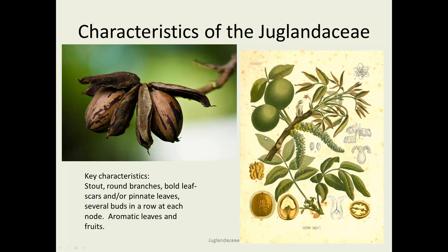On the right are walnut characteristics. You can see the large pinnate leaves, the nut inside a husk that isn't opening at maturity, the male flowers in catkins and the little reduced female flowers. In particular, the twigs are quite stout. Large leaf traces and glandular markings on the stems and leaves make it quite aromatic.